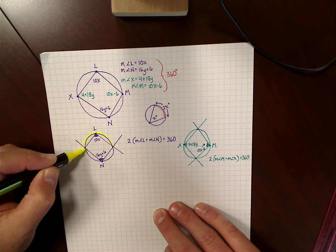So if I take the measure of angle L plus the measure of angle N, and I double it, it's going to equal the whole circle. Well, if that's the case, algebra says that I can take both sides and divide by two. So the measure of angle L plus the measure of angle N is equal to 180 degrees.